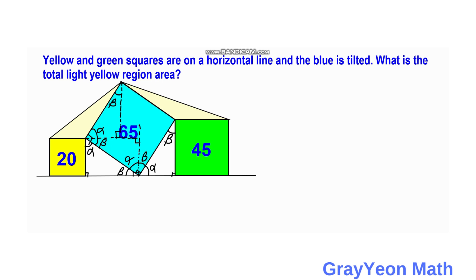If we draw a horizontal line from the green square to the left, since the topmost angle comes from a square, this should be 90 degrees. There should be a complementary angle alpha, and since it is a right triangle, there should be angle beta. For this final right triangle, this angle should be the complementary of beta, which is alpha.